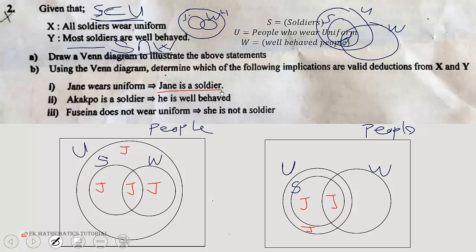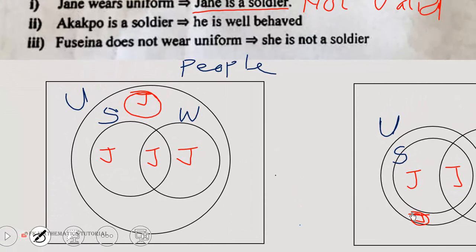There are people who wear uniform but are not soldiers. So the fact that Jane wears uniform does not necessarily mean she is a soldier. Because that statement is not always true, it is not valid. Jane could be someone who wears uniform but is not a soldier. Both diagram possibilities give the same conclusion: implication (i) is not valid.